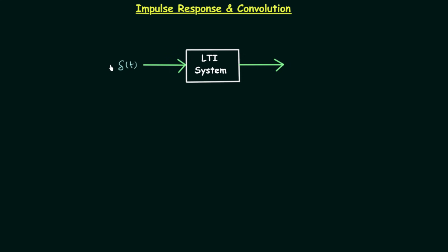The input must be a unit impulse. You cannot have 2δ(t) — that is not a unit impulse but an impulse signal having weight equal to 2. Therefore it is not a unit impulse signal. You should have a unit impulse signal, and when this unit impulse signal acts as input to your LTI system, some output will be generated, and this particular output is known as the impulse response h(t).